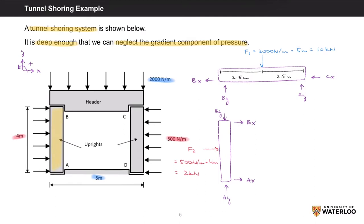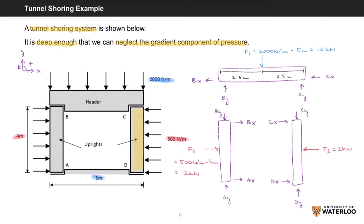For the upright on the right, we will have reactions CY and CX acting downwards and to the right respectively. Again, they are internal reactions, so they act opposite to how I drew them on the header. We will also have DY and DX, assumed to act in our positive directions. The distributed load transforms into a concentrated point load F3, which has the same magnitude as F2 of 2 kN, but this time acting to the left.